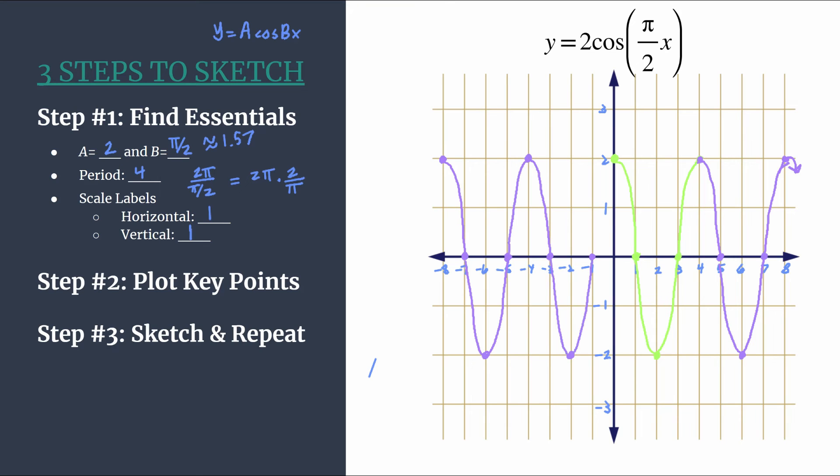So once you've got one cycle, you have as many cycles as you could ever want. And we'll show it continues in the negative direction as well. So we have a really nice looking sketch of 2 cosine pi over 2x. One final thing before we finish.